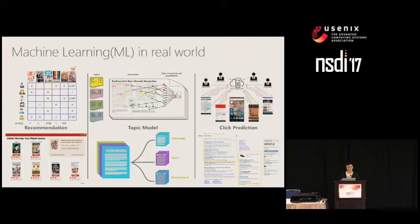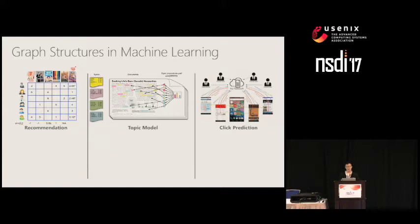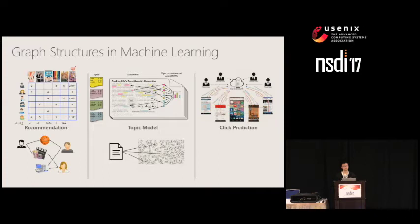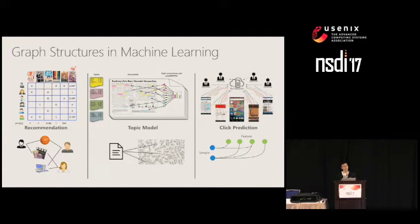Many machine learning tasks have inherent graph structure. In recommendation systems, users rate items, so users and items can be modeled as vertices in a graph, and the rating behavior of a user to an item can be considered as an edge. Similarly, in topic models, a document naturally contains words, and this inclusion relationship can be modeled as a graph. In click prediction, training samples touch multiple features, so samples, features, and their relationships construct a graph.